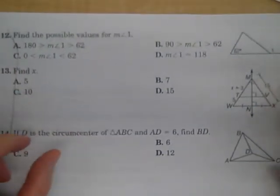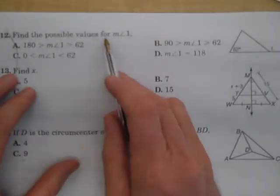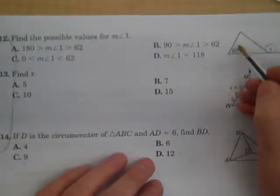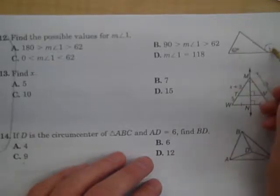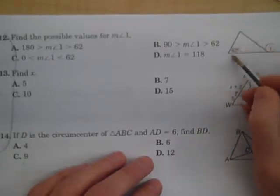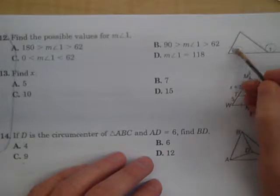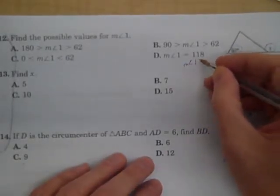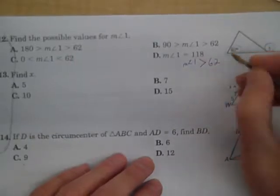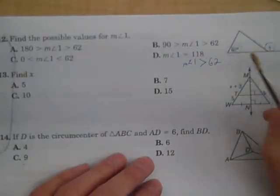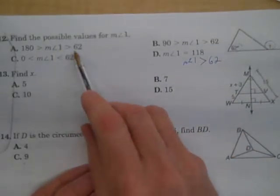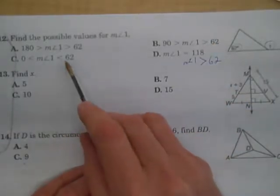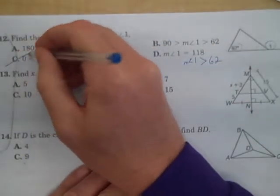Now, number 12. Find the possible values for the measure of angle 1 right here. Well, this is an exterior angle. Angle 1 is, sorry. This is 62 degrees. It's one of the remote interior angles. So I know that the measure of angle 1 has to be more than that. More than 62.